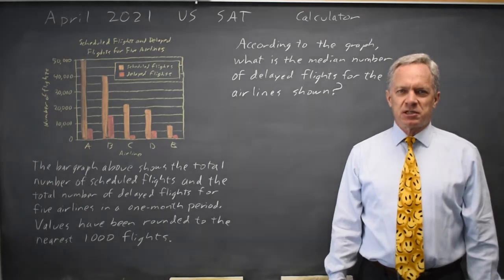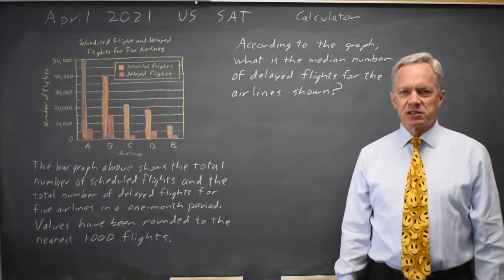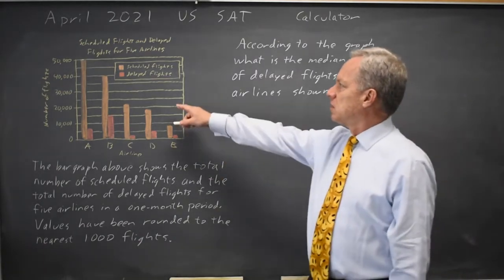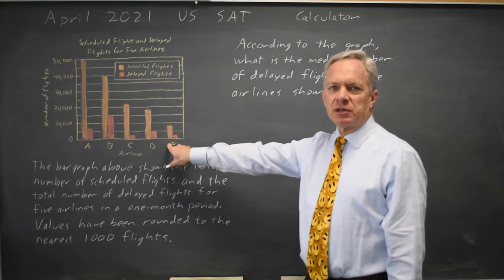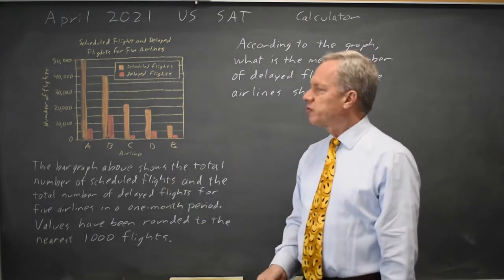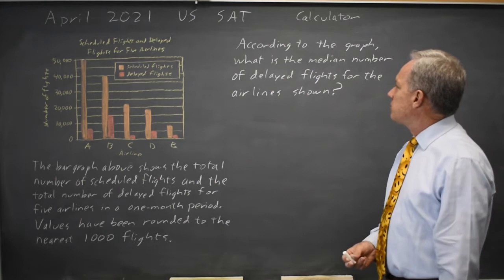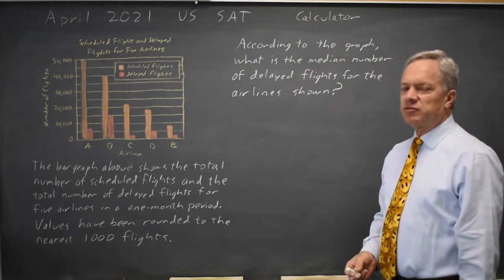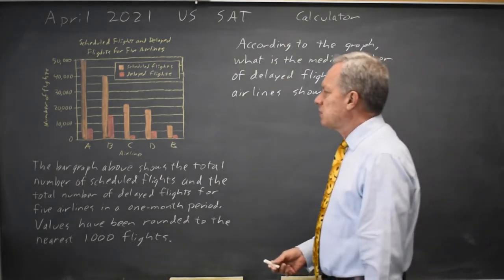I'm Dr. Roger, and this question is from the April 2021 USAT Calculator section. College Board gives a bar graph showing scheduled flights and delayed flights for five airlines, and they ask: what is the median number of delayed flights in this bar graph?